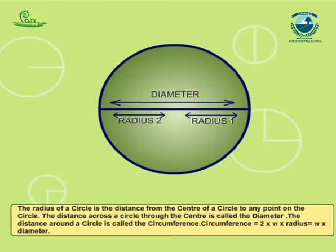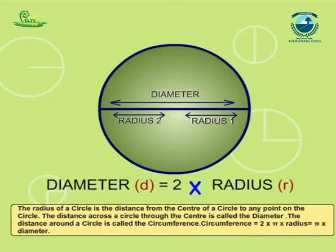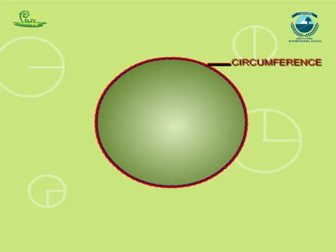This relationship is expressed in the following formula: d is equal to 2 multiplied by r.